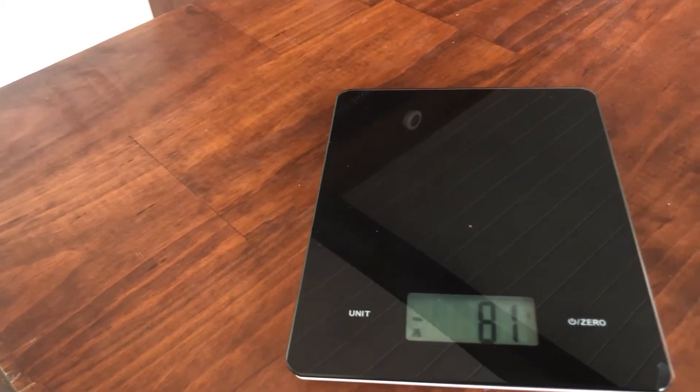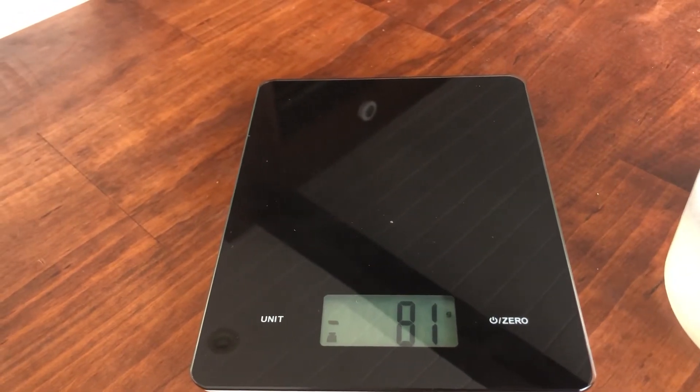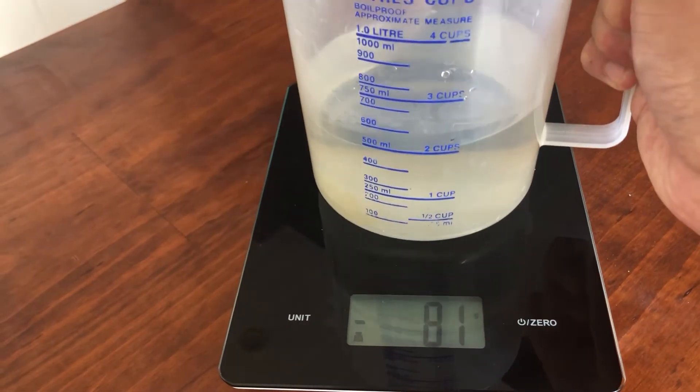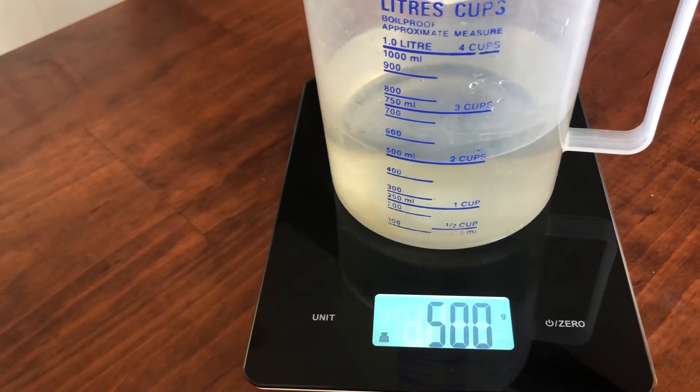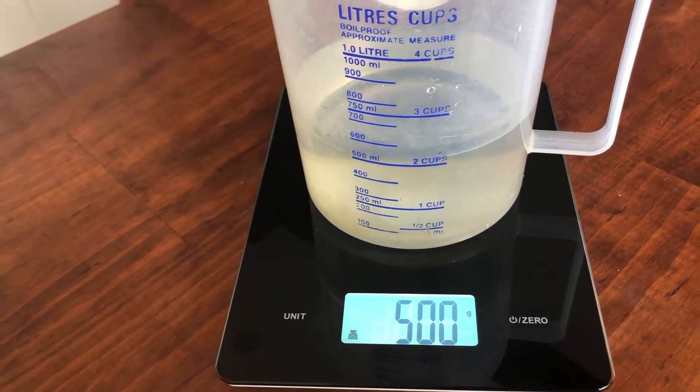That way then when I put my jug on I don't have to worry about calculating in regards to what the jug was. So I can put my 500 mils on our scales and you can see that it weighs exactly 500 grams.